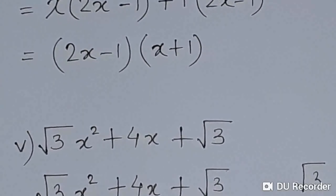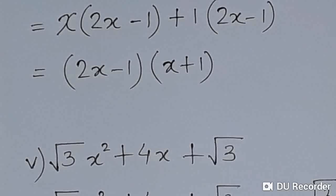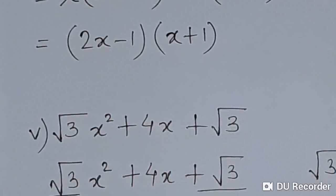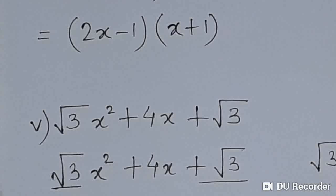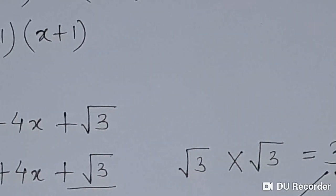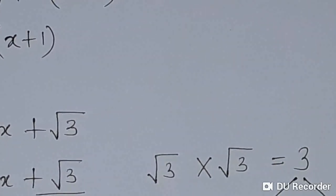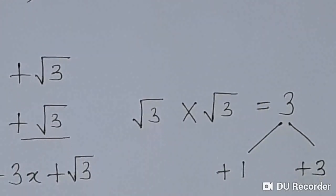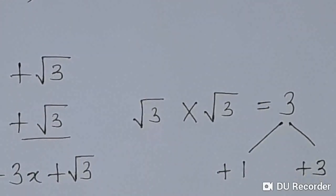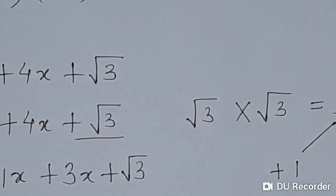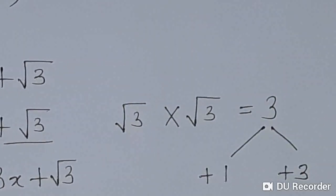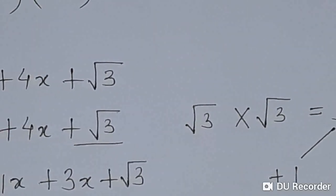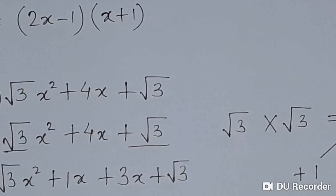For √3x² + 4x + √3, we take the coefficient of the first term and the constant (third term). I have underlined them. Multiplying √3 by √3 gives 3, and 3 can be written as 1 × 3. Taking both positive, we get 3, and 1 + 3 = 4, which matches the middle term coefficient +4.